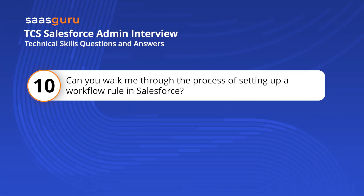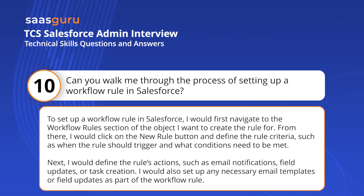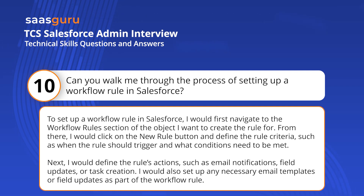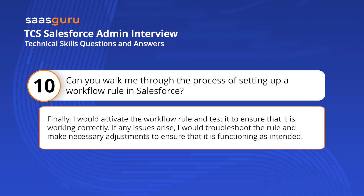Can you walk me through the process of setting up a workflow rule in Salesforce? I would first navigate to the workflow rules section of the relevant object, click the New Rule button, and define the rule criteria — such as when the rule should trigger and what conditions need to be met. Next, I would define the rule's actions, such as email notifications, field updates, or task creation, and set up any necessary email templates. Finally, I would activate the workflow rule and test it to ensure it is working correctly, troubleshooting and making adjustments as needed.